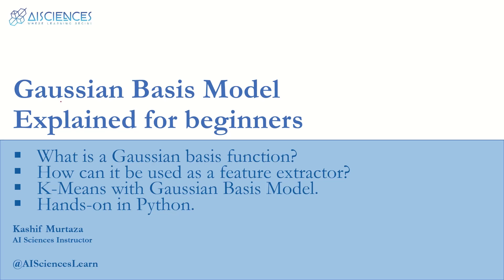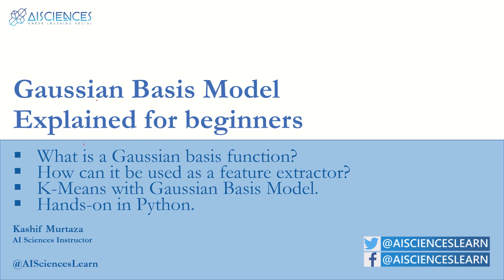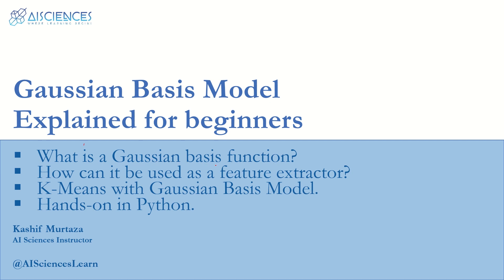Hello everyone and welcome to Gaussian Basis Model explained for beginners. I'm your instructor Kashif Murtaza from AI Sciences. In this video we are going to talk about a basis model which is very famous in machine learning, known as Gaussian Basis Model, also sometimes known as Radial Basis Model. We will see what is a Gaussian Basis function and how this model can be used as a feature extractor to reduce or increase the dimensionality of our data. We will also see a relationship of k-means clustering with Gaussian Basis Model and finally implement it in scikit-learn with a regression task.